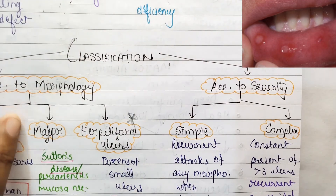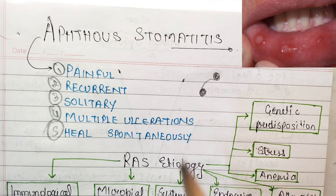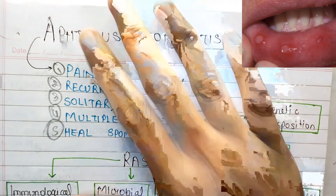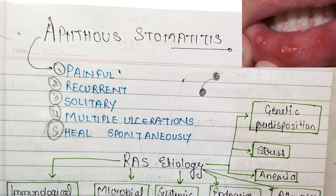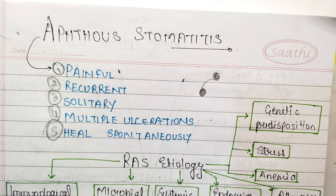So this is part one of aphthous stomatitis, in which we discussed the introduction — five main things to know — then the etiology with eight types: immunological, microbial, systemic, endocrine disturbances, anemia, stress, genetic predisposition, and allergies. In classification we covered minor aphthae, major aphthae, herpetiform ulcers, and based on severity, simple and complex. Our next video will cover clinical features.